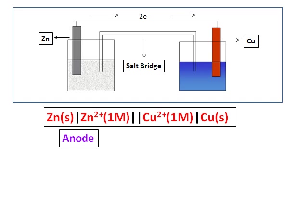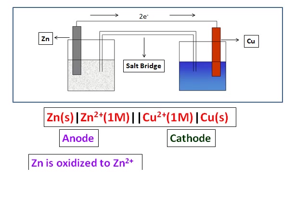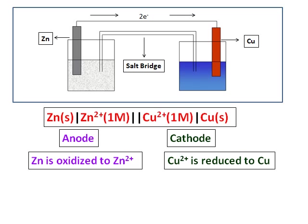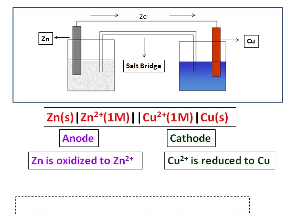And the individual half cells are separated by a single line. The one written on the left-hand side is always the anode. One written on the right-hand side is always the cathode. And in the anode, as we know, zinc is oxidized to Zn2+. And in the cathode, copper ion is reduced to copper. So this is the easier way of representing a cell.